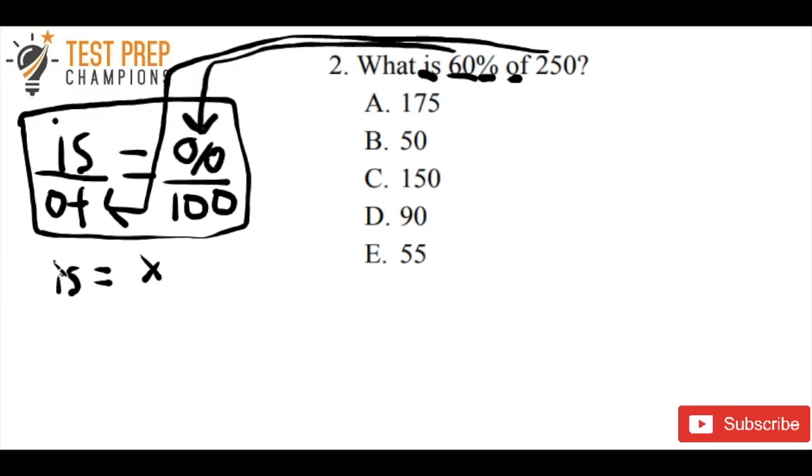Now using some basic math we can plug these terms right into our equation. Is, like I said, that's going to be just x for right now since that's a variable. So we put an x in for is and for of we're going to put in 250, and we're going to set this equal to 60 divided by 100.